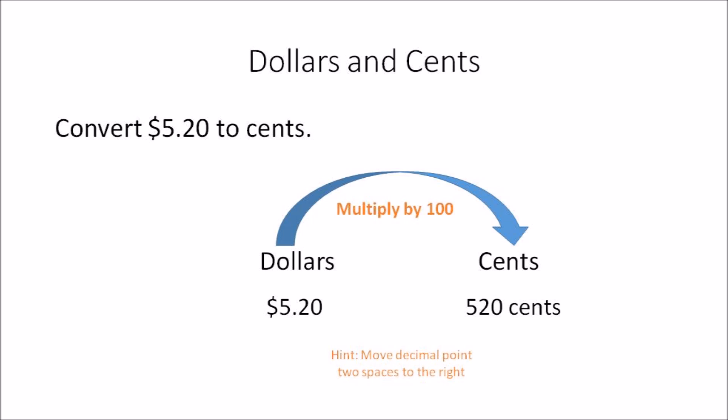In this example, convert five dollars and twenty-two cents. Again, you're converting dollars to cents, so you multiply by 100. When you multiply five dollars and twenty cents by 100, the answer you get is 520 cents. As a hint, when you multiply by 100 you move the decimal point two spaces to the right.